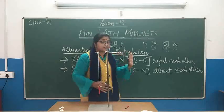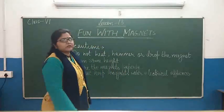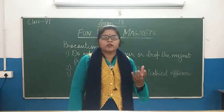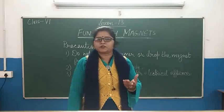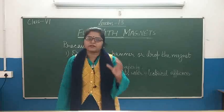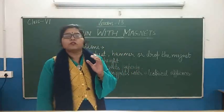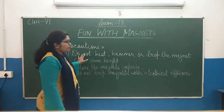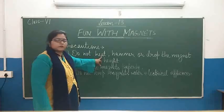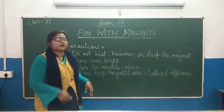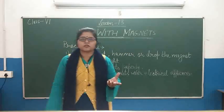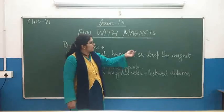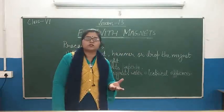So, same or like poles repel each other, and opposite poles attract each other. Now, what are the precautions we should take to maintain the magnetic effect of a magnet? Most importantly, we should never hit the magnet. We should never try to straighten or bend the magnet, and when a magnet is dropped from a height, it loses its magnetism.